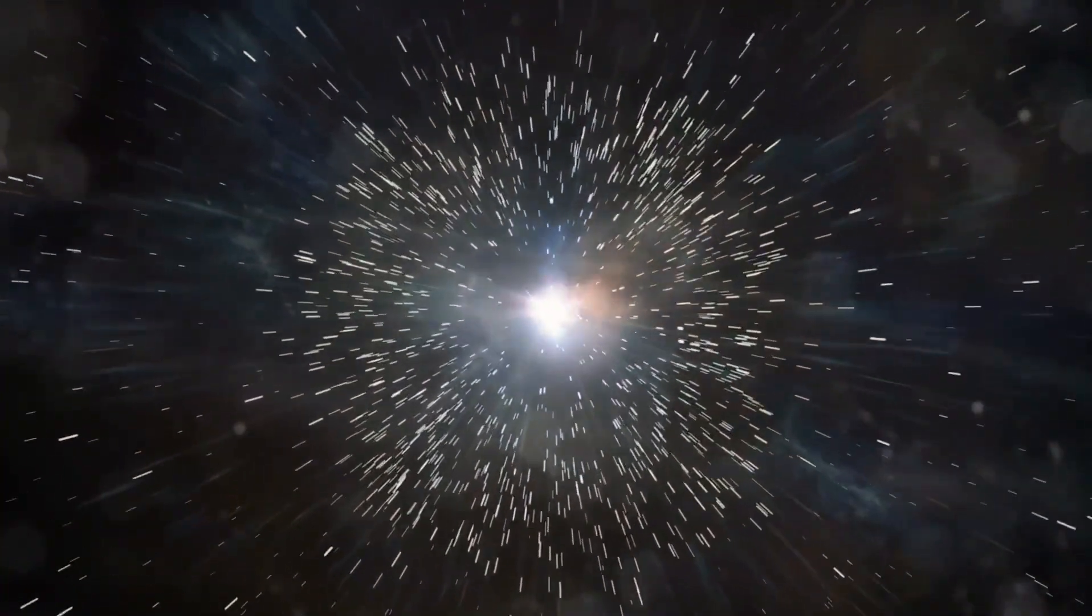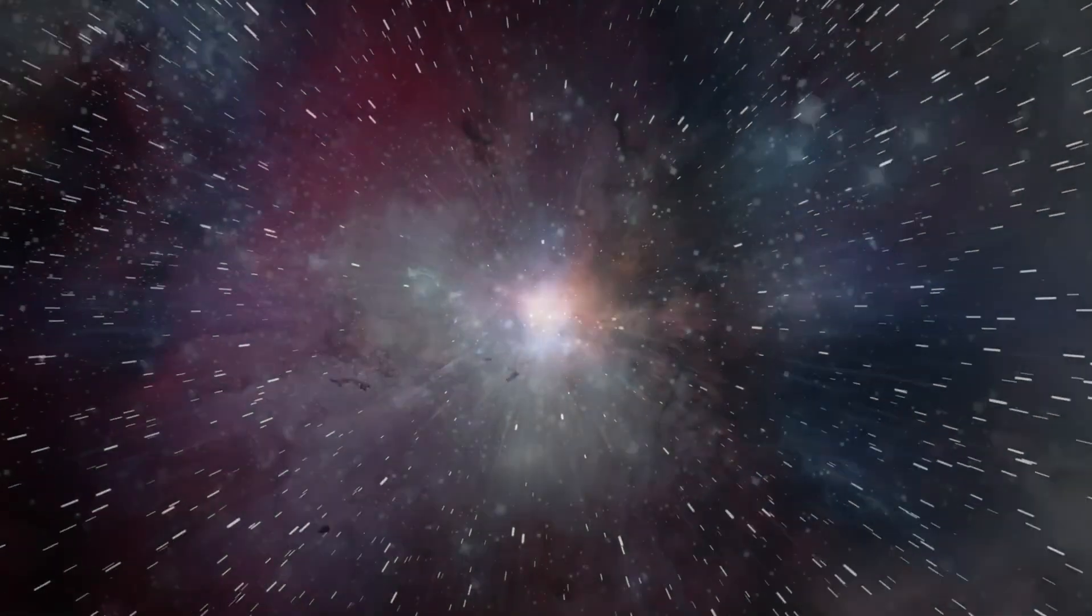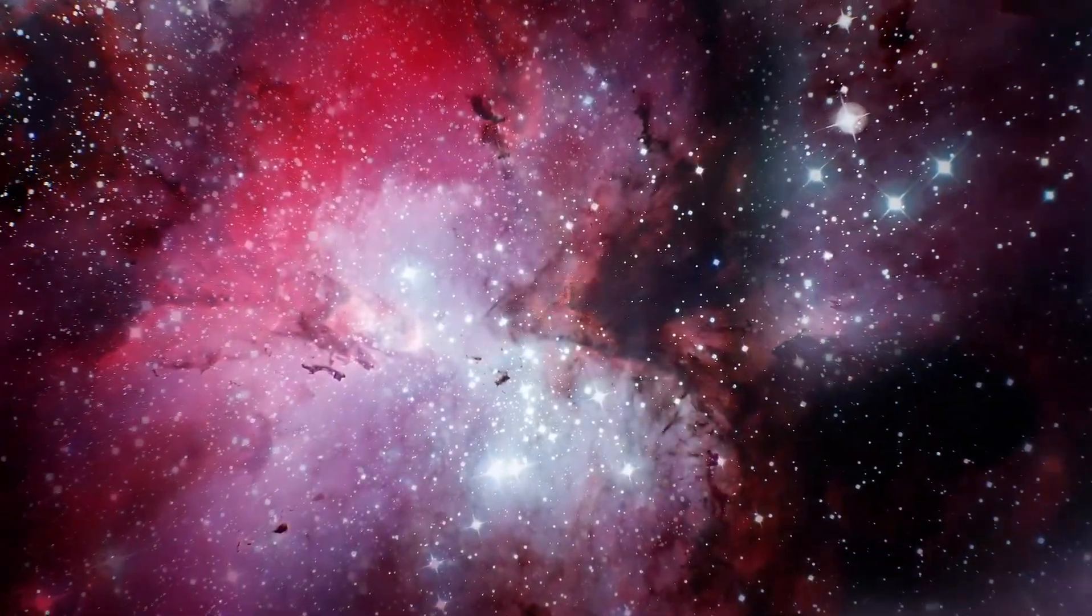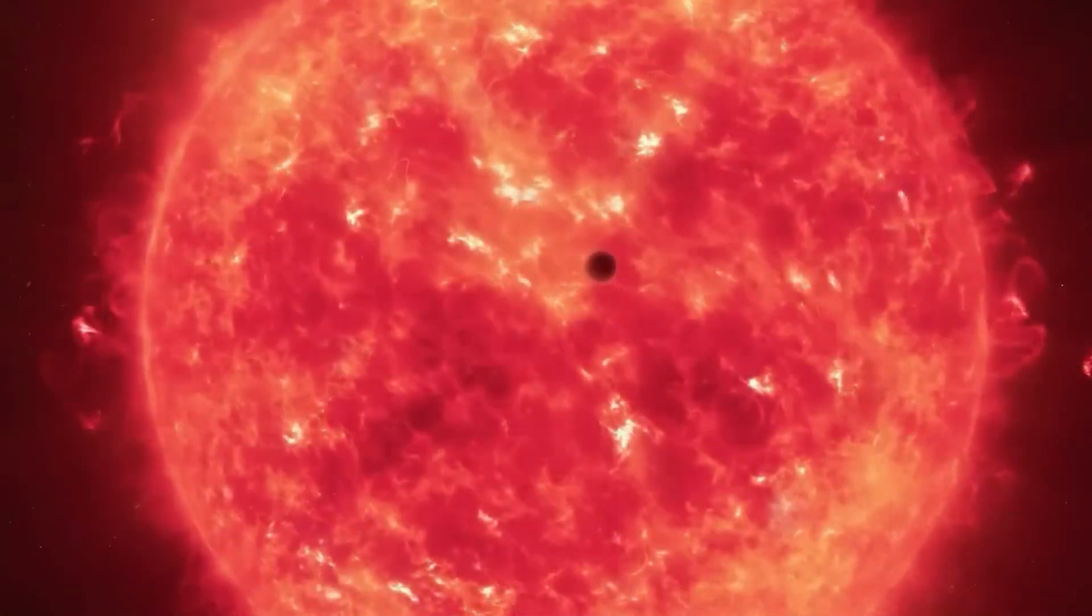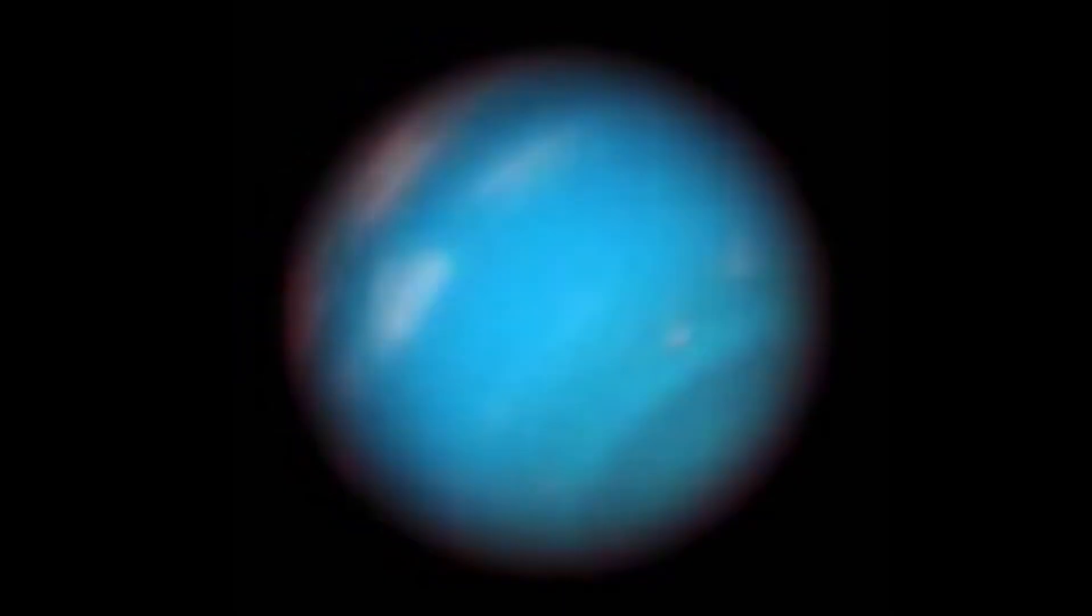Another characteristic of Neptune is that it is the only celestial body in our solar system that cannot be seen with the naked eye from Earth. This is only possible with the help of special astronomical telescopes. The chances of seeing Neptune itself are best on clear evenings in autumn.